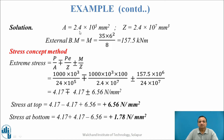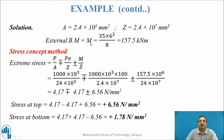Area of section is B into D, and the modulus of section is BD squared by 6. Area of section B into D works out to 2.4 into 10 to the power of 5 mm square, and modulus of section Z = BD squared by 6 works out to 2.4 into 10 to the power of 7 mm cube. External bending moment for a simply supported span is WL squared by 8, that is 35 into 6 squared divided by 8, which works out to 157.5 kN meter.